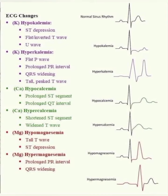For hypocalcemia we'll see prolonged ST segment and prolonged QT interval. For hypercalcemia we'll see shortened ST segment and widening of the T wave. For hypomagnesemia we'll see tall T wave and ST depression. For hypermagnesemia we'll see prolonged PR interval and QRS widening. To summarize: QRS widening is common in both hypermagnesemia and hyperkalemia, while ST depression is seen in both hypomagnesemia and hypokalemia.